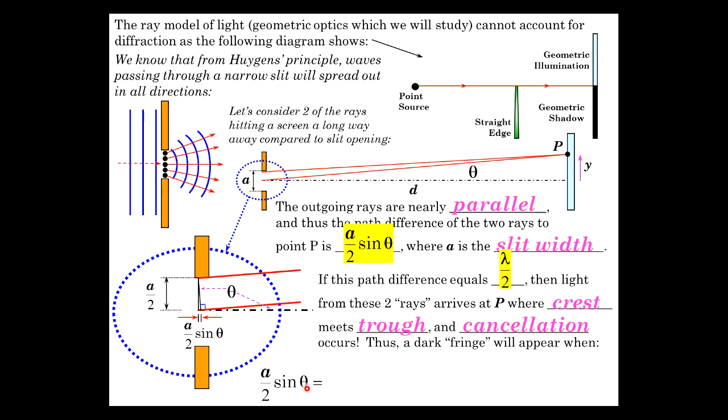When A over 2 sine of theta is equal to plus or minus a half a wavelength. Or sine of theta, the twos will go away there. We can divide both sides by A. And we get lambda over A.